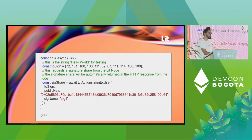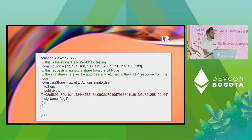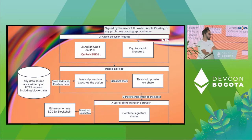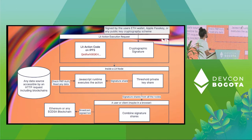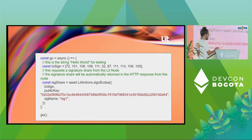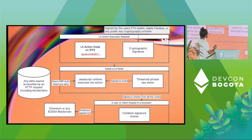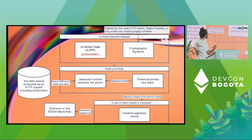This is very similar to the token approval pattern used on Ethereum, where you can grant a smart contract the ability to transfer your tokens. But instead of granting the ability to transfer tokens, you're granting the ability to sign anything with this programmable key pair. The user can create a lit action execution request. They pass in an IPFS CID — which is some JavaScript code — and a cryptographic signature that could come from their Ethereum wallet, an Apple Passkey, or any public key cryptography scheme.